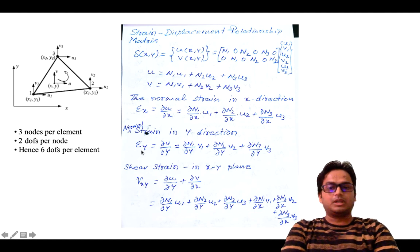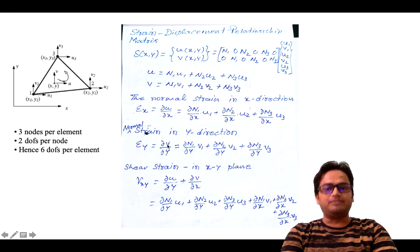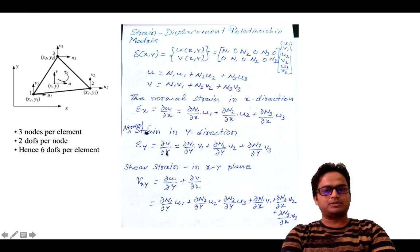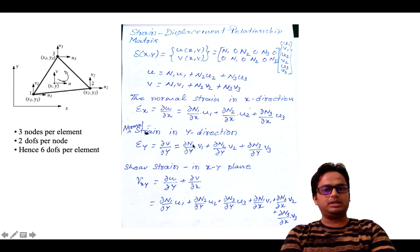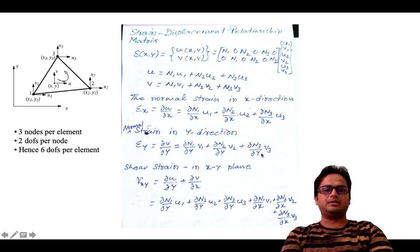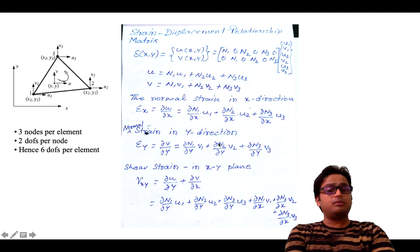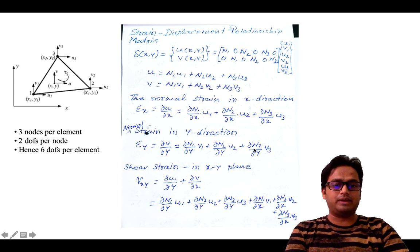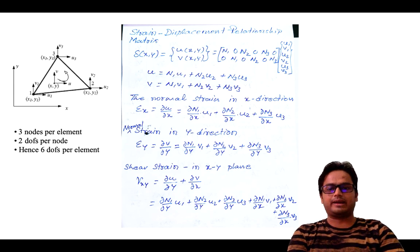Similarly, the normal strain in y direction, epsilon_y, is given by dv/dy. Here v is the vertical displacement in the y direction. Differentiating gives: dn1/dy·v1 plus dn2/dy·v2 plus dn3/dy·v3. This is the partial differential where n1, n2 and n3 are functions of x and y, as derived when we derived the shape function for the constant strain triangle.